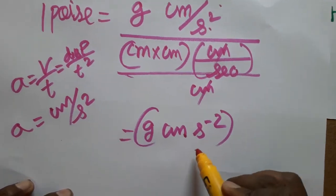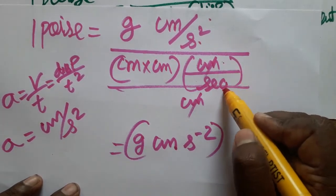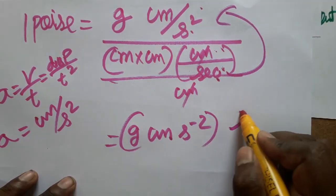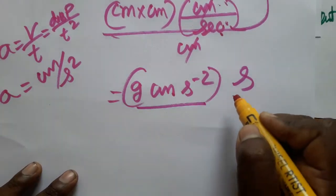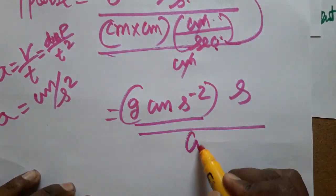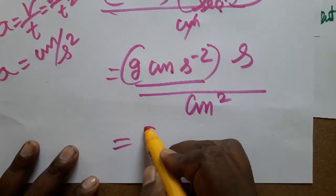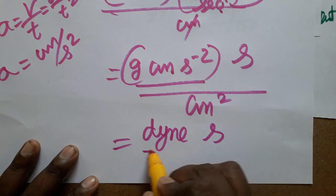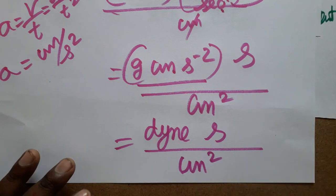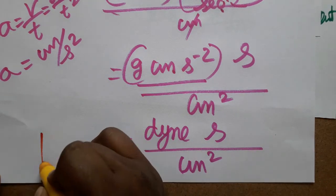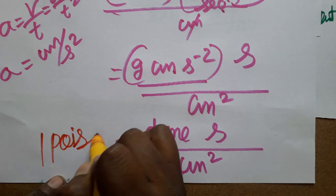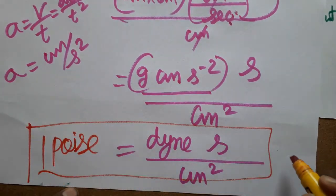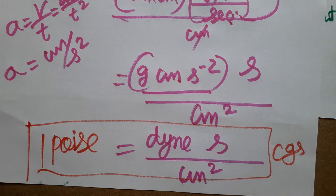Gram times centimeter per second squared is called a dyne. The second from the denominator comes to the numerator, so we get dyne times second divided by centimeter squared. This whole expression is called one poise — it is the unit of coefficient of viscosity in the CGS system. Thank you, if you like my channel please subscribe.